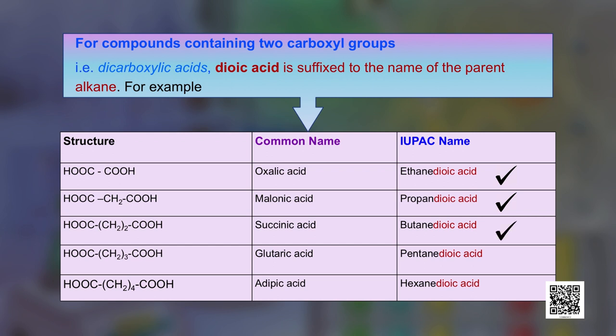Succinic acid contains 4 carbon atoms and 2 carboxyl groups, giving the IUPAC name butanedioic acid. For a 5-carbon chain with 2 carboxyl groups, the common name is glutaric acid and the IUPAC name is pentanedioic acid. Adipic acid, a very useful compound, is known as hexanedioic acid, containing 2 carboxyl groups and 6 carbon atoms in total.